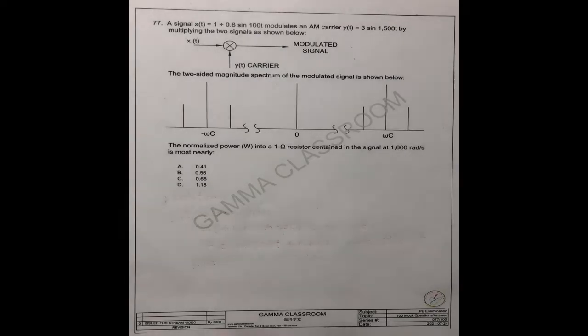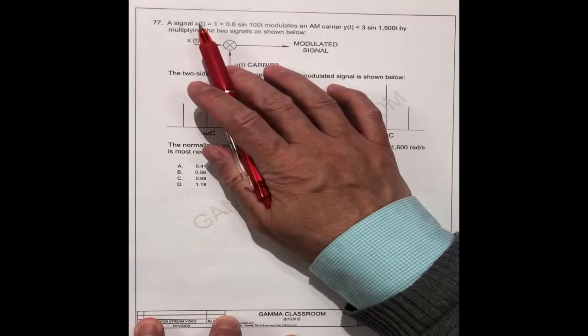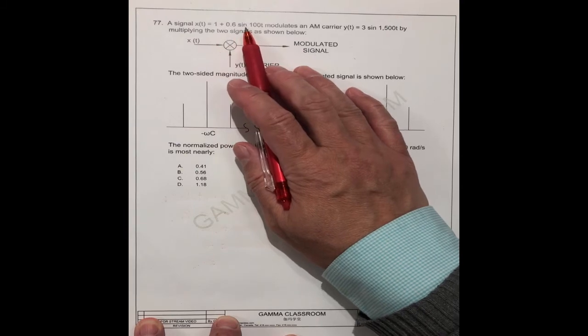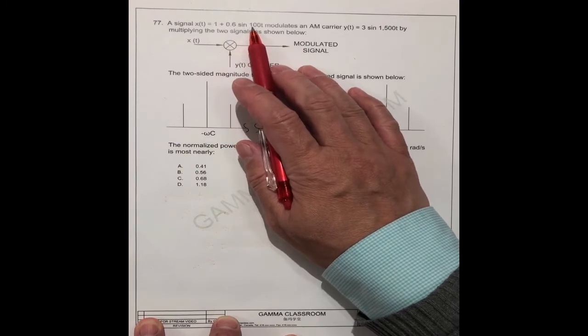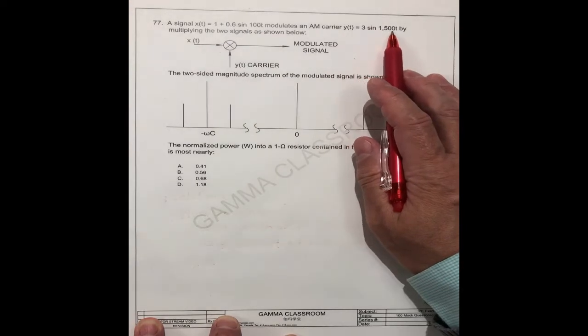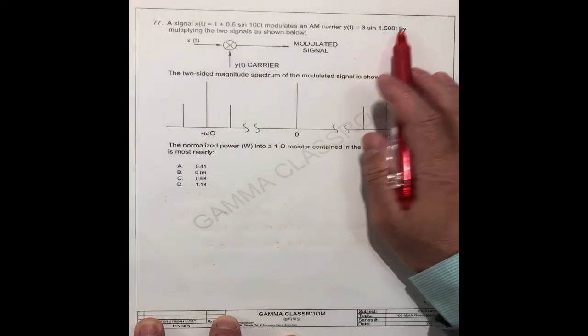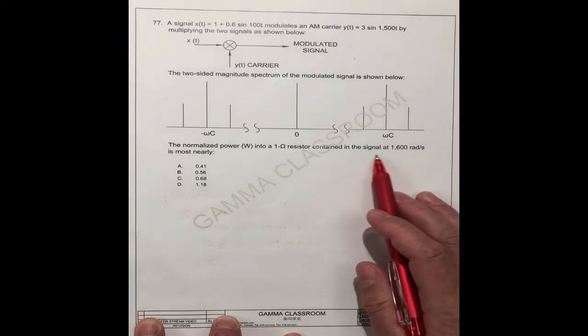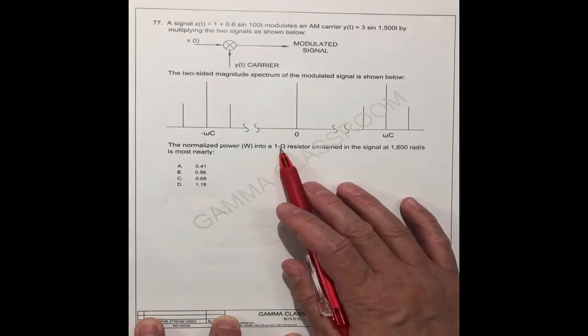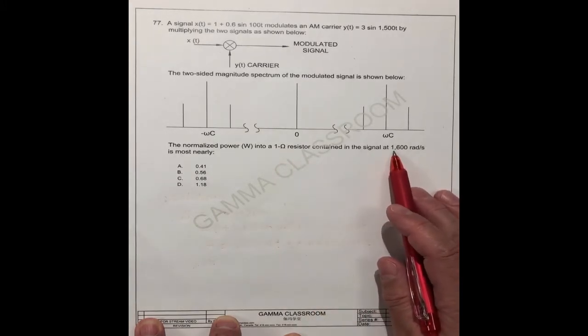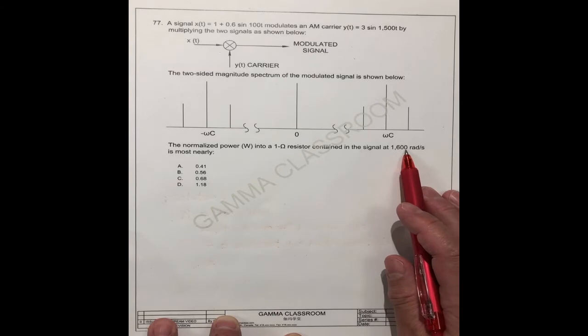We know we have two signals here. One is 1 + 0.6sin, the rotation speed is 100t. The other one is 1500t. But he asks you the power consumed in the 1 ohm resistor and the rotation speed should be 1600.